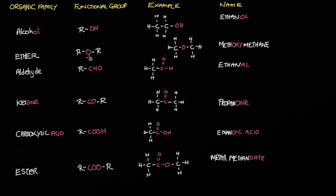Ethers have an oxygen in the middle with an R group on either side. In our example here, we've got a methyl group on the left and a methyl group on the right, representing our two R groups. This happens to be called methoxymethane. The clue with regards to the name is the 'oxy' — if you see 'oxy', you're dealing with an ether.